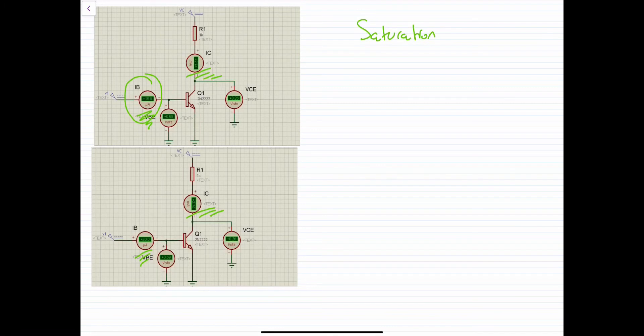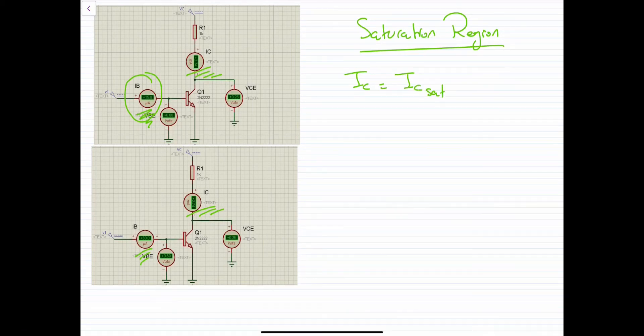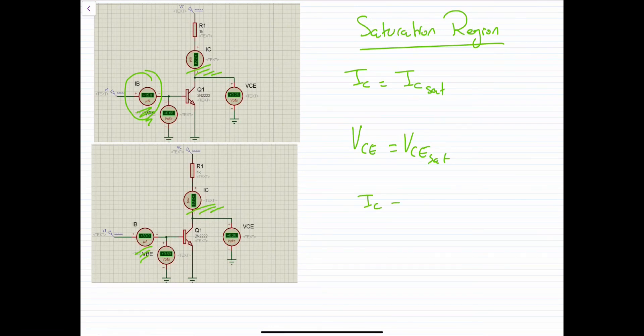The third region is the saturation region. In this region the transistor is also ON, but IC will no longer increase with the increase of base current. For IB equals 15 microamps, IC equals 2.74 mA, and if we double the base current to 30 microamps, IC stays at 2.74 mA. In saturation: IC equals IC(saturation) and VCE equals VCE(saturation), which drops to approximately 0.26 V. Here IC is maximum while VCE is minimum.